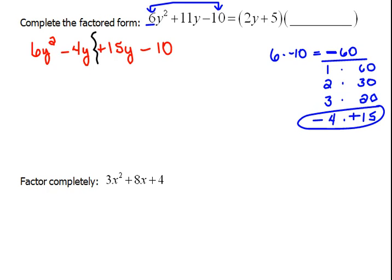But now, we can do factor by grouping, because we have four terms. In our first two terms, we can pull out a 2 and a y that they have in common, which will leave us with 3y minus 2.